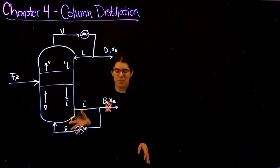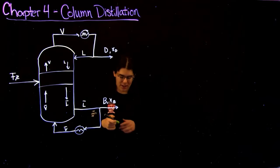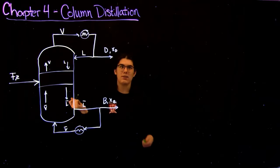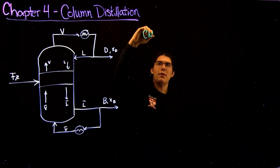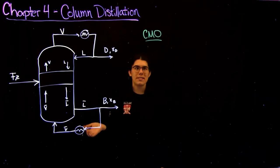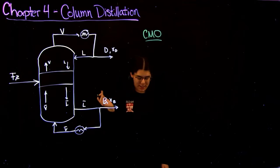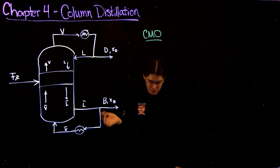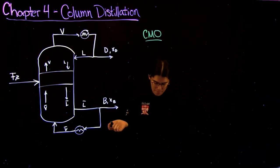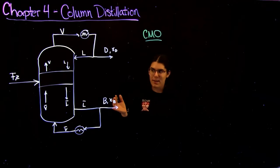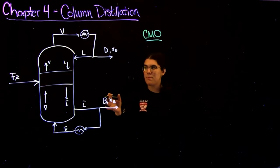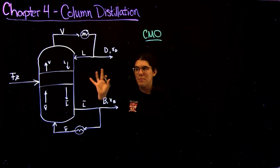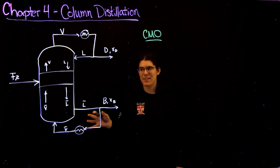How we solve problems with distillation columns is we use something called the CMO assumption. CMO stands for constant molar overflow, and basically what that means is that the liquid and vapor flows are constant both in the stripping and rectifying sections.